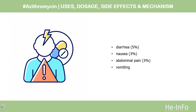The most common adverse effects are diarrhea (5%), nausea (3%), abdominal pain (3%), and vomiting. Fewer than 1% of people stop taking the drug due to side effects. Nervousness, skin reactions, and anaphylaxis have been reported. Clostridium difficile infection has been reported with use of azithromycin. Azithromycin does not affect the efficacy of birth control, unlike some other antibiotics such as rifampin.